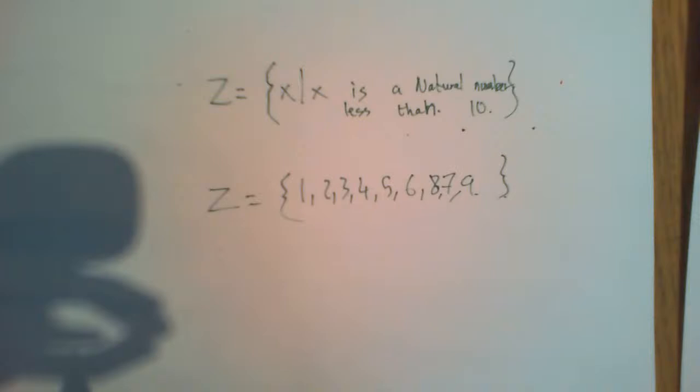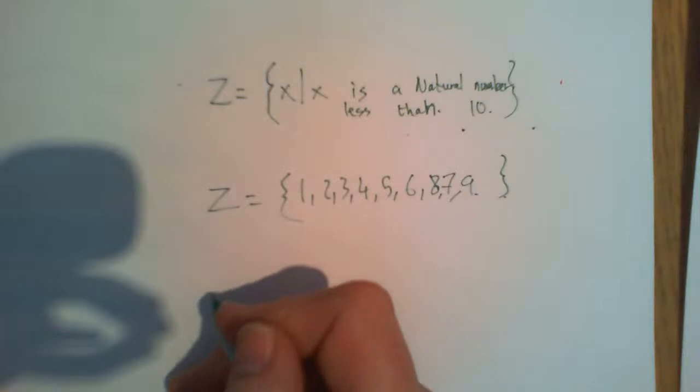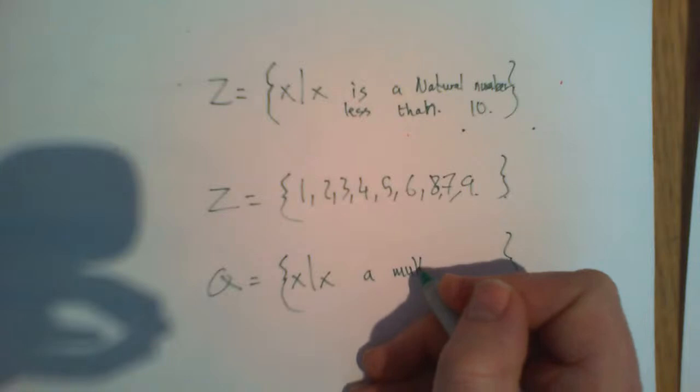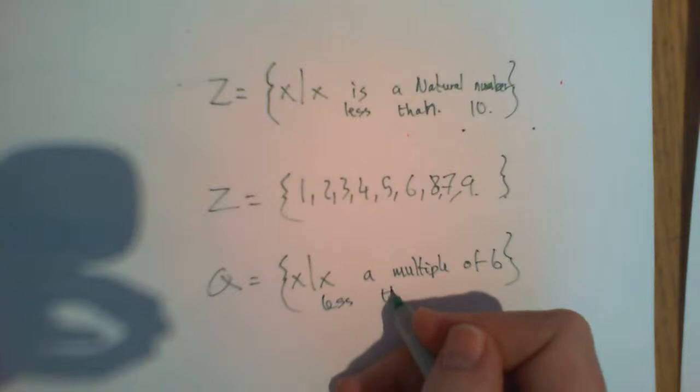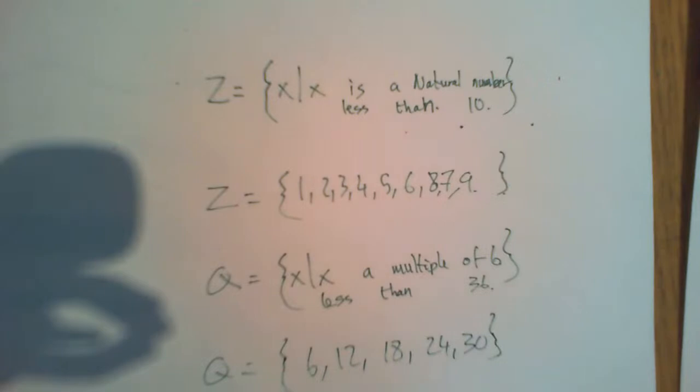What about Q is a set of values of x such that x is a multiple of 6 less than 36? So what do you think Q will be? Well, the first multiple of 6 less than 36 is just 6, 12, 18, 24, and 30. There you have them.